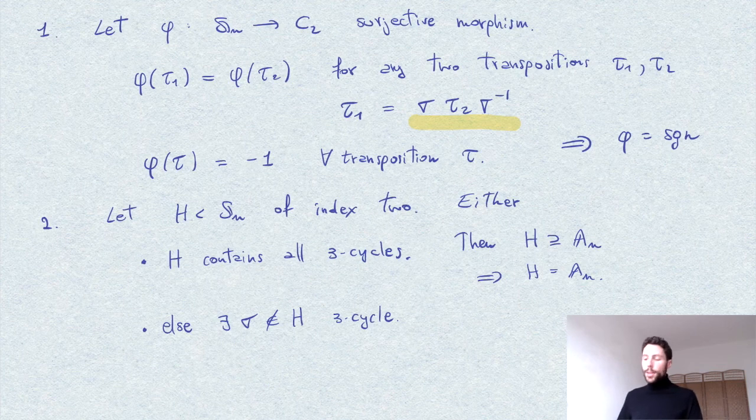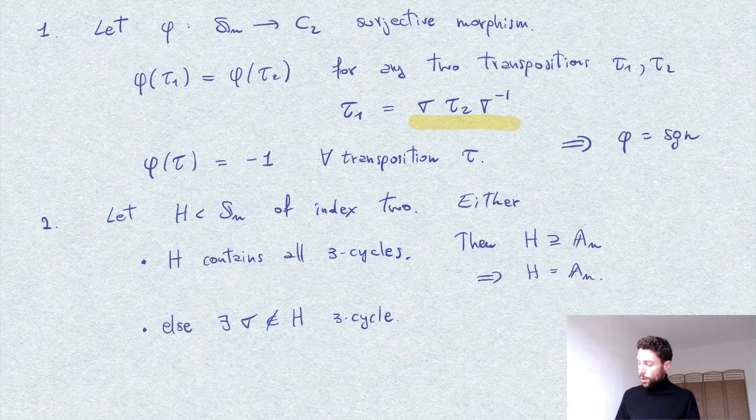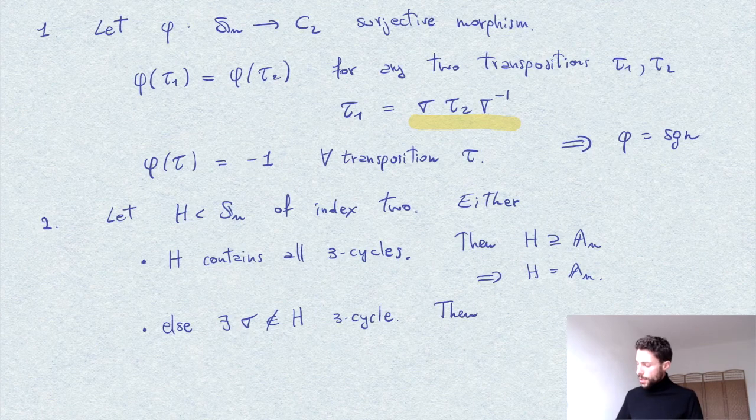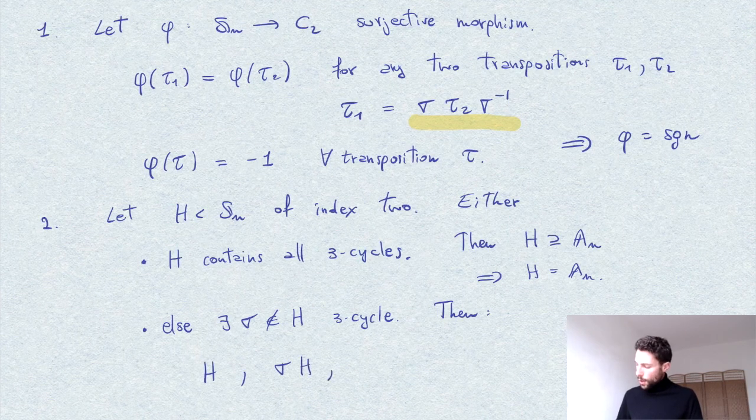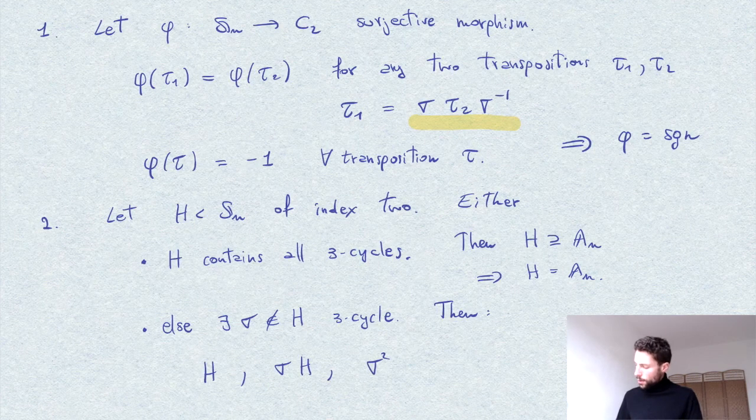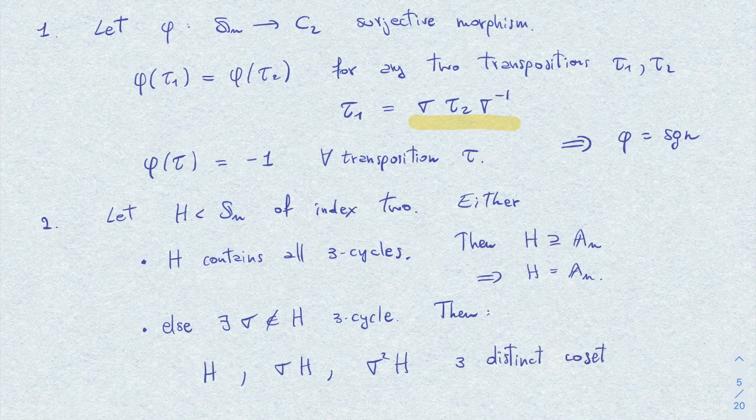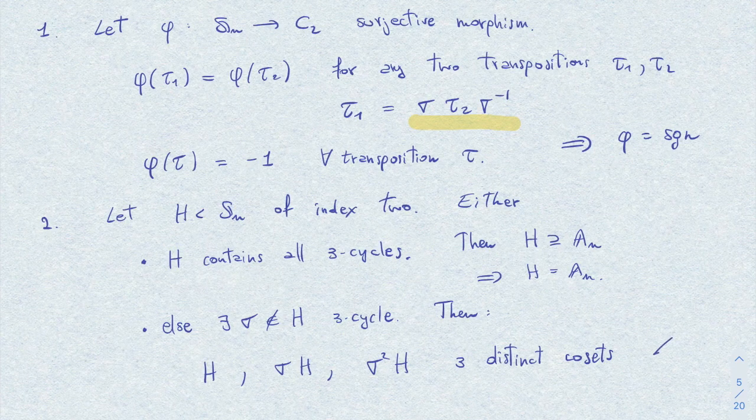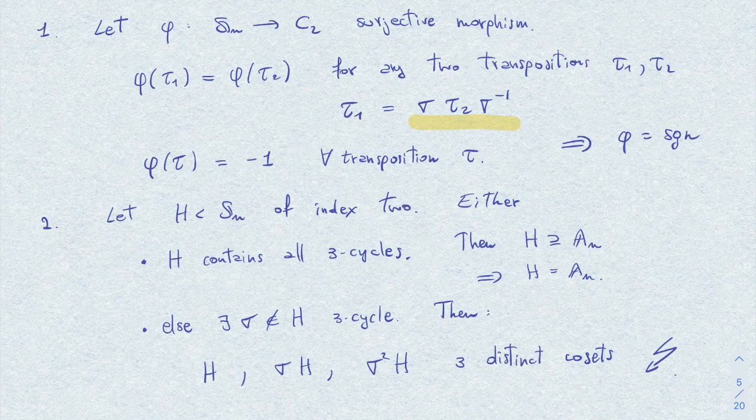Well then we look at the orbit of sigma, and we see that we have H, sigma H, and sigma squared, which is also equal to sigma inverse H, and these are three distinct cosets of H. And this is clearly absurd since H has index 2.